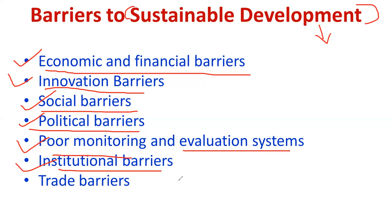Similarly, top management sometimes may not support an institution because the institution has its own policy. For example, consider a plastic manufacturing organization — how can they implement environmental protection activity? Because plastic itself is a barrier to sustainable development. I am 100% saying we cannot survive without plastic; it is ruling nowadays for packaging, logistics, and inventory management. Plastic is mandatory, but it will have a negative, adverse effect on society.